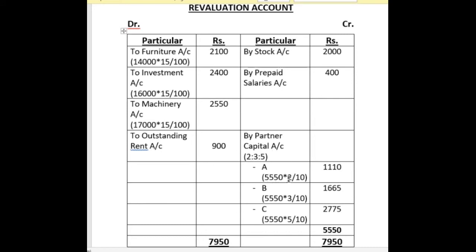We divide the revaluation loss of Rs. 5,550 in the ratio 2:3:5. Share of A is 1,110, share of B is 1,665 and share of C is 2,775. This balance is transferred to partner's capital account.